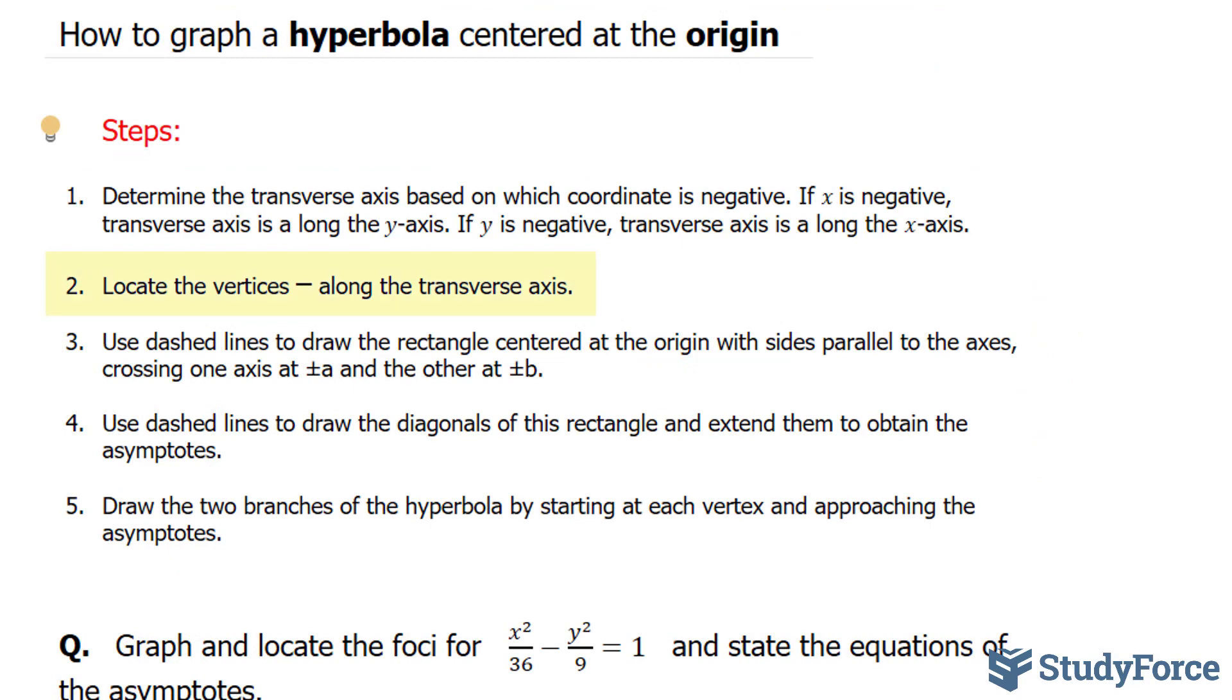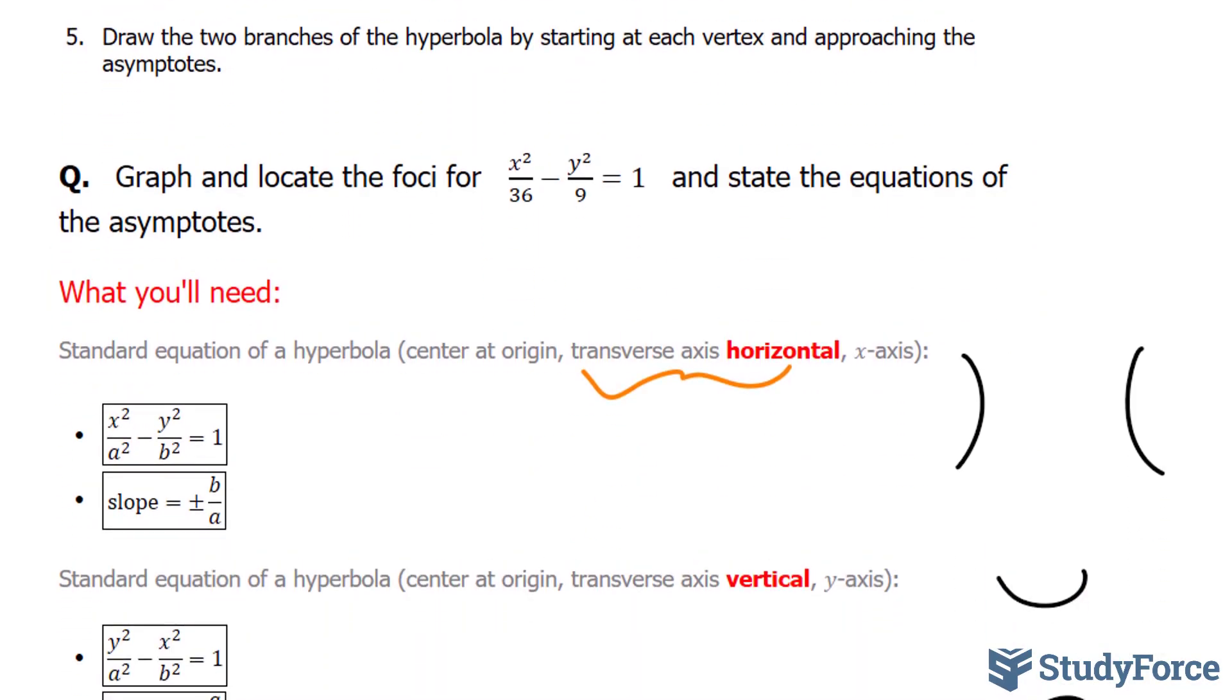In step number two, we have to locate the vertices that are along the transverse axis. To locate the vertices, you'll focus on what is assigned as a. And the reason why we look at a and not b is because if the transverse axis were vertical, then we would focus on b as our vertex.